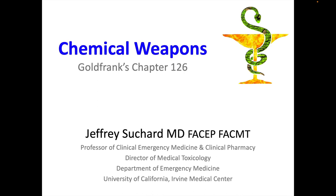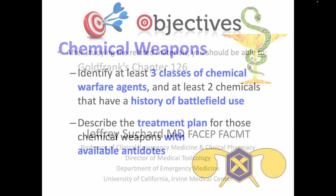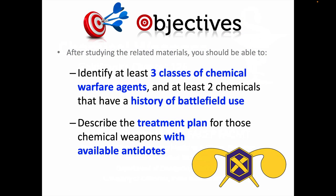In this video, we're going to be discussing chemical weapons, corresponding to Goldfrank's Chapter 126. The learning objectives for this session are that you'll be able to identify at least three classes of chemical warfare agents, including at least two chemicals that have a history of battlefield use, and to describe a treatment plan for those chemical weapons that have available antidotes.